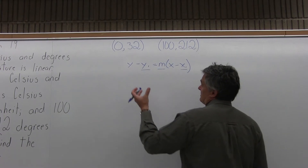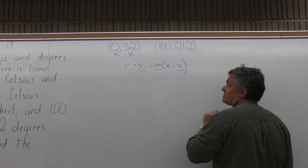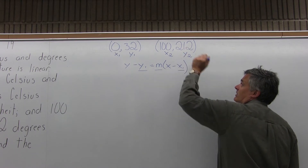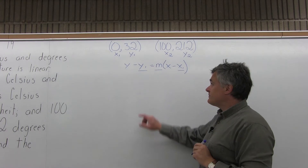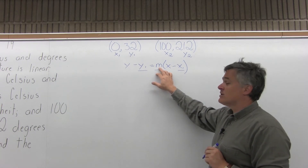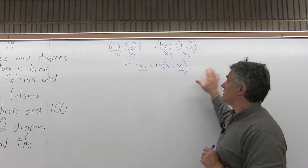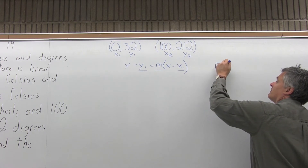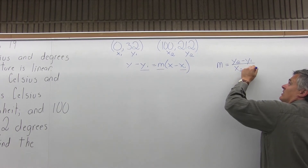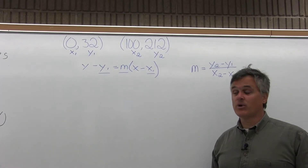So 0 comma 32 is my first point. I'll consider its x coordinate to be x1 and its y coordinate to be y1. And 100 comma 212 is the second point, so its x coordinate I'll label as x2 and its y coordinate as y2. That gives me most of what I need to fill in the formula for the equation of a line. One piece I still need is m, the slope, so I'll figure that out off to the side.